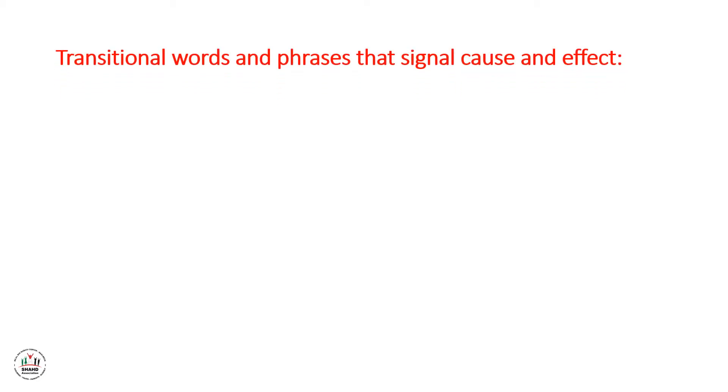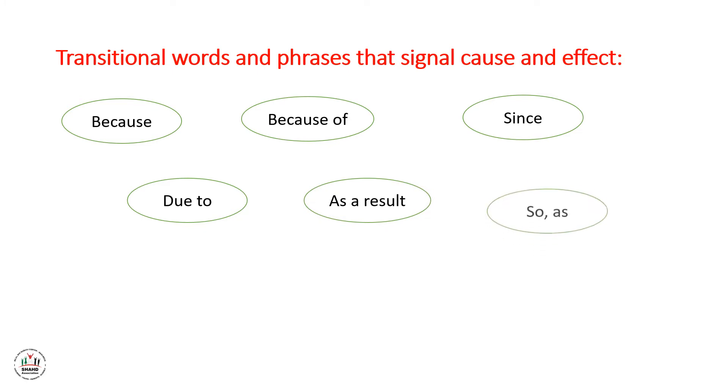Transitional words and phrases that signal cause and effect: because, because of, since, due to, as a result, so, as, when, consequently, and therefore.